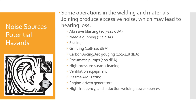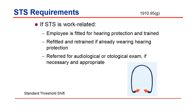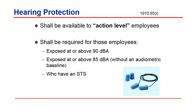STS requirements — standard threshold shift: if a standard threshold shift is work-related, the employee is fitted for hearing protection and trained. If already wearing hearing protection, they are refitted and retrained, and referred to an audiological or otological exam if necessary and appropriate. Hearing protection shall be available to action-level employees and shall be required for those exposed at or above 90 decibels, those exposed at or above 85 decibels without an audiometric baseline, and those who have had a standard threshold shift.